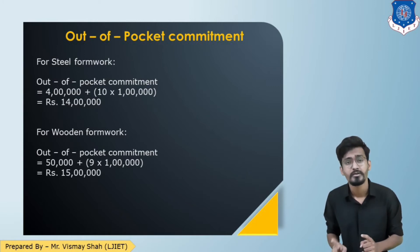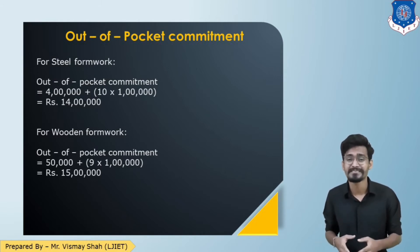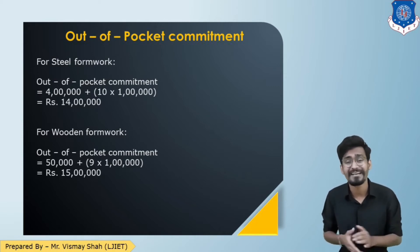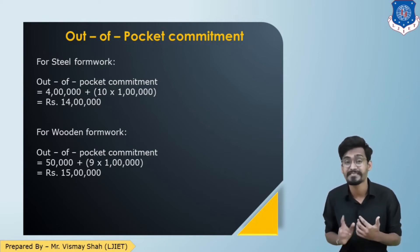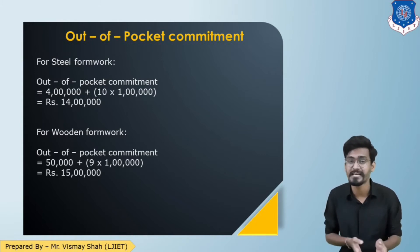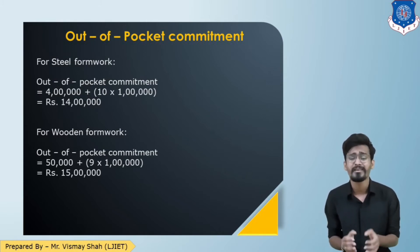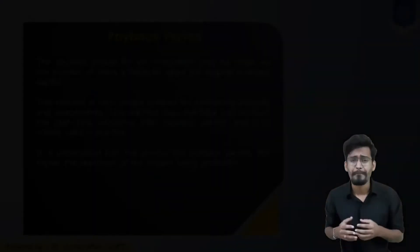For wood: the formwork of 50,000 is for only one month, so we need it 12 times — 50,000 × 12 = 6 lakhs. Plus labor: 1 lakh × 9 = 9 lakhs. Total = 9 + 6 = 15 lakhs. Option 1 (steel) = 14 lakhs, option 2 (wood) = 15 lakhs. Total expense is less for steel, so we should go for steel. That is how out of pocket commitment helps us decide.